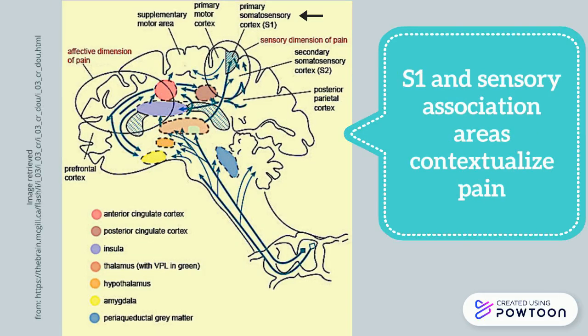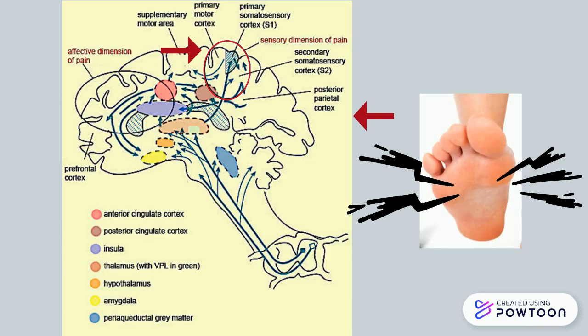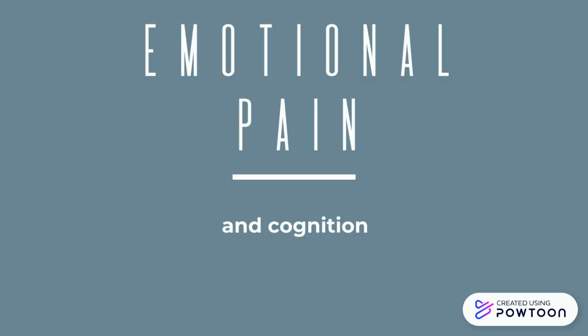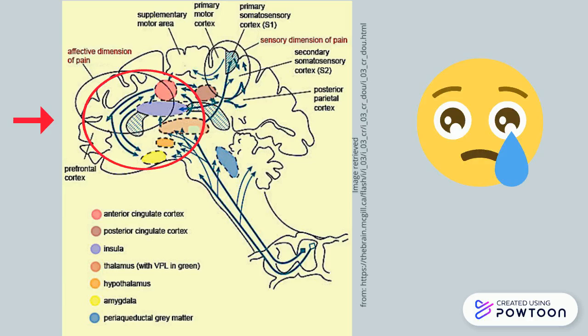The lateral system, including the somatosensory cortex and the sensory association areas, plays a role in contextualizing pain, recognizing it, and remembering past pain, as well as discriminating the various properties of pain like location and intensity. The structures in the medial parts of the brain impact emotional and affective response to pain — the suffering.